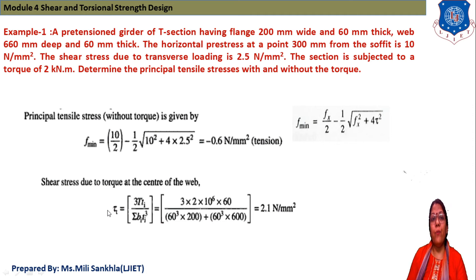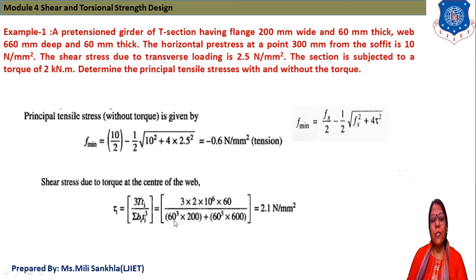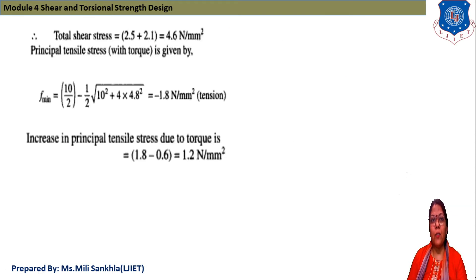Now we find the shear stress due to torque at the centre of the web. For the T-section using the rectangle formula: τ = 3T·Ti / (Σ Bi·Ti³). Torque T = 2 kN·m. For the flange: Ti = 60 mm, Bi = 200 mm, Ti³ = 60³. For the web: depth = 600 mm, Ti = 60 mm, Ti³ = 60³. After calculating, the shear stress due to torque is 2.1 N/mm².